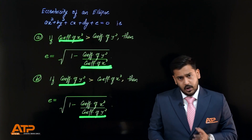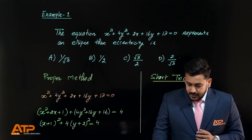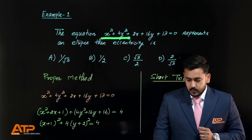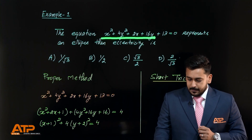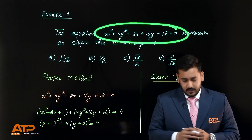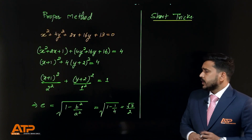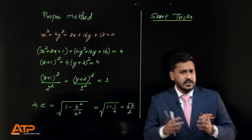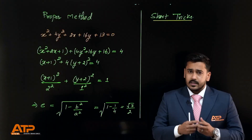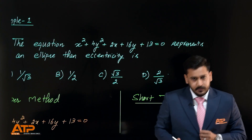Let's look at some examples. The equation of the ellipse is given as x² + 4y² + 2x + 16y + 13 = 0. We have to find the eccentricity. The proper method is given here — it might take one to two minutes — but let's solve this using the short trick.